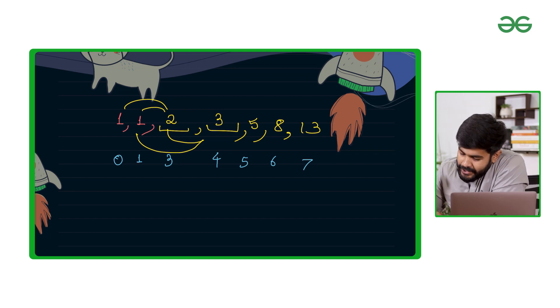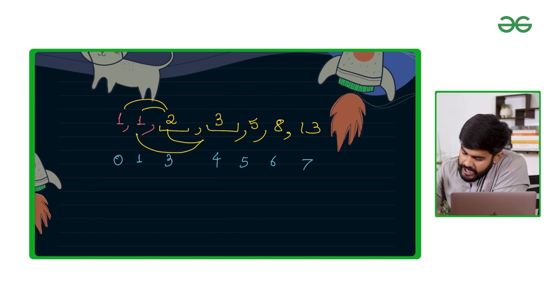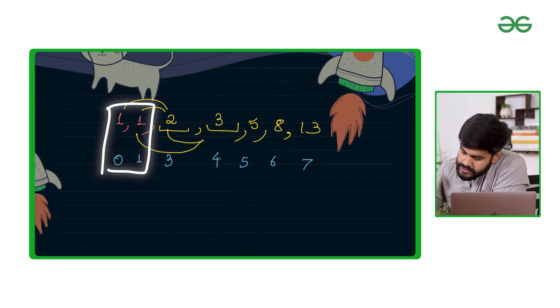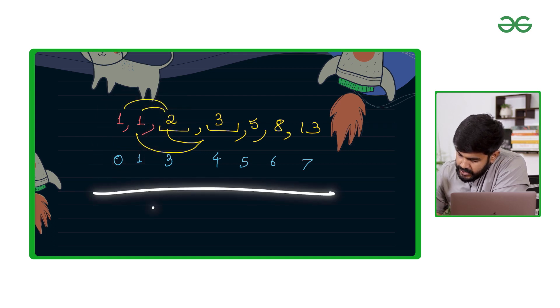What you can really do is these two values are already given to us and rest all values would be a summation of previous two.